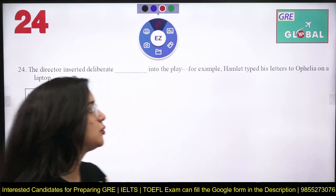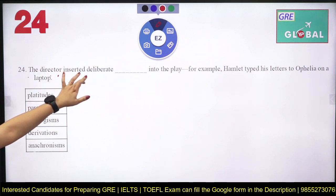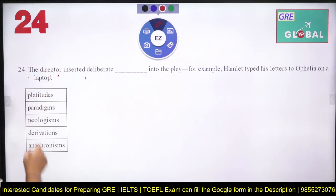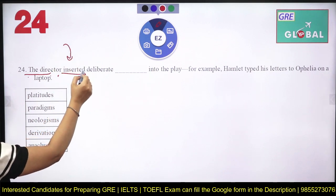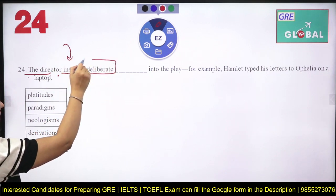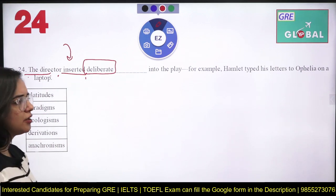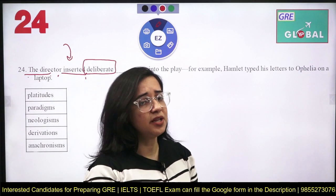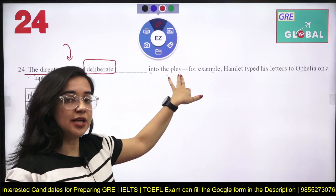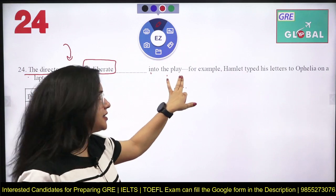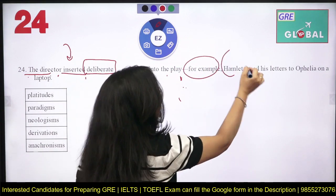Let's get started with this exercise. 'The director inserted deliberate ___ into the play.' So there is a director and he inserted something deliberately — jaan buch kar usne kuch cheez play mein daali hai — but we don't know what yet. For example, what he deliberately entered is given as a clue.